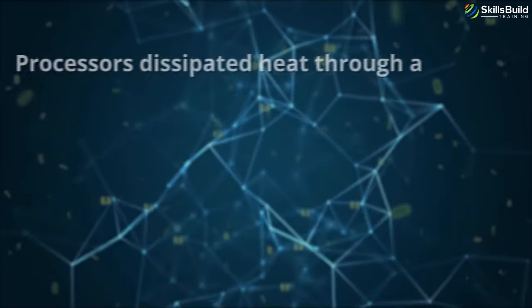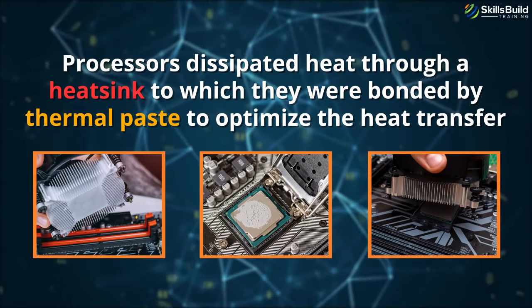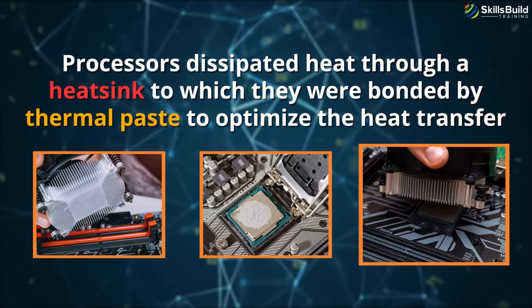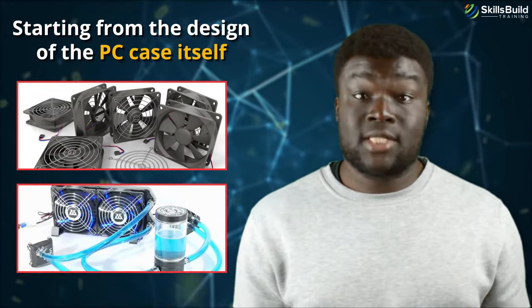As a result of the countless cycles they complete per second, CPUs generate a great deal of heat. Initially, processors dissipated heat through a heat sink to which they were bonded by thermal paste to optimize the heat transfer. Now, CPUs have a different system for cooling down, starting from the design of the PC case itself, using multiple fans and water cooling systems depending on the level of heat generated.